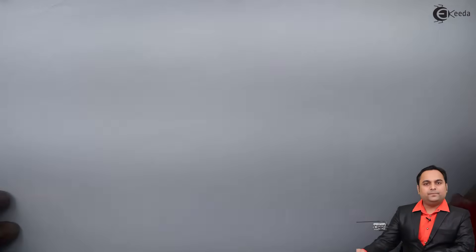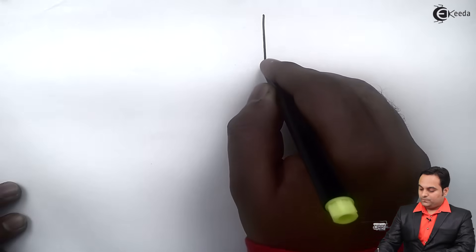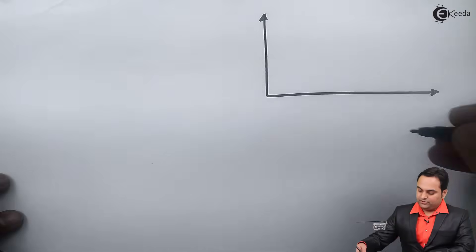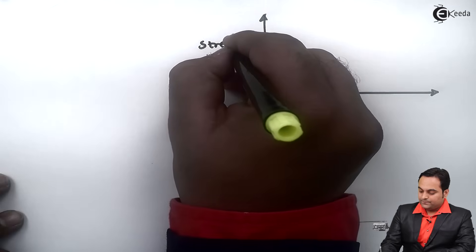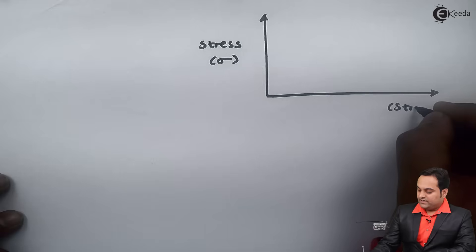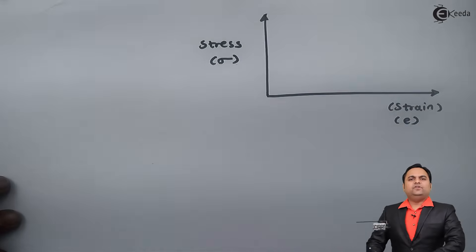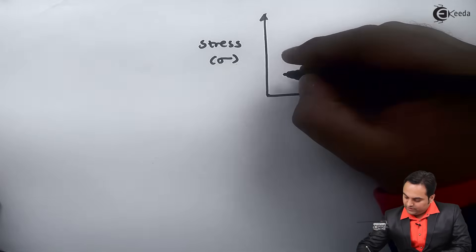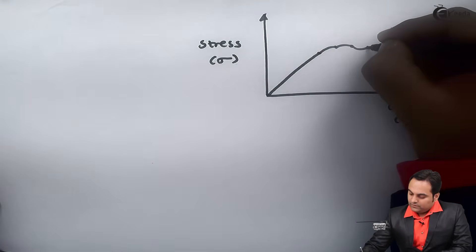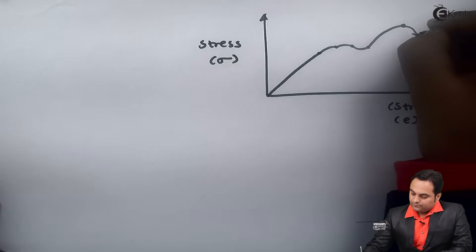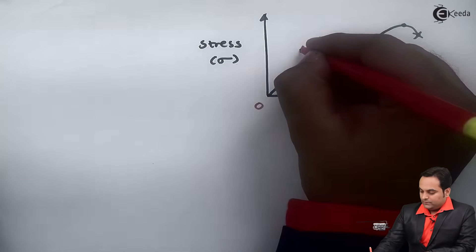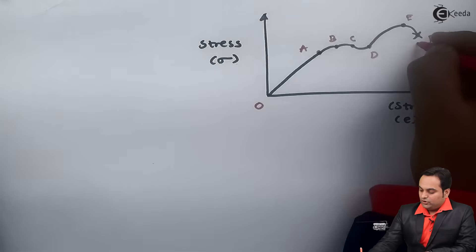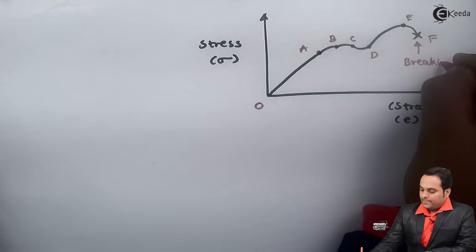To understand this, I will show a simple stress-strain graph drawn for a ductile material because it flows easily. On the Y-axis I have stress (sigma) and on the X-axis I have strain (e). The behavior of a ductile material is plotted with points 0 to A, then B, C, D, E, and finally at F the object breaks, so F is called the breaking point.